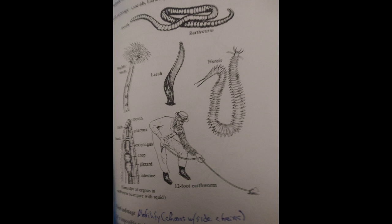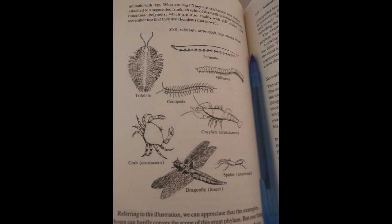Here we have the sixth substage, representing the principle of mobility — chains with side chains. Notice that he's got a trilobite, ripped from the Cambrian epoch, next to a crab which didn't evolve until much later, and dragonflies and spiders which didn't evolve until the Carboniferous period. All these creatures are from different epochs. This is a spatial thinker's way of representing evolution, and it has nothing to do with the reality of how animals actually evolved on this Earth.